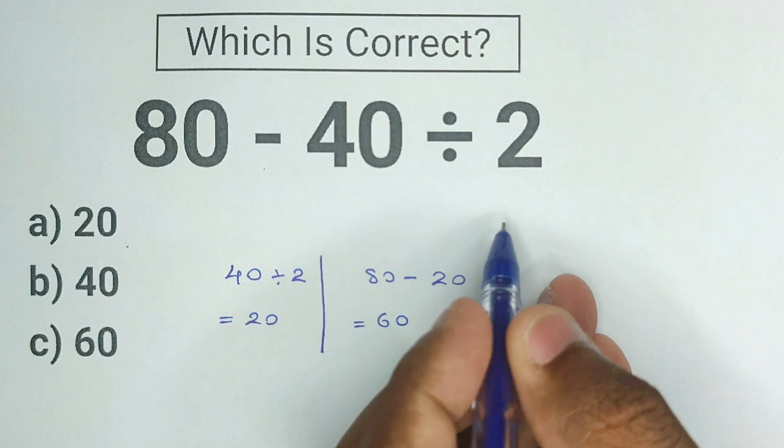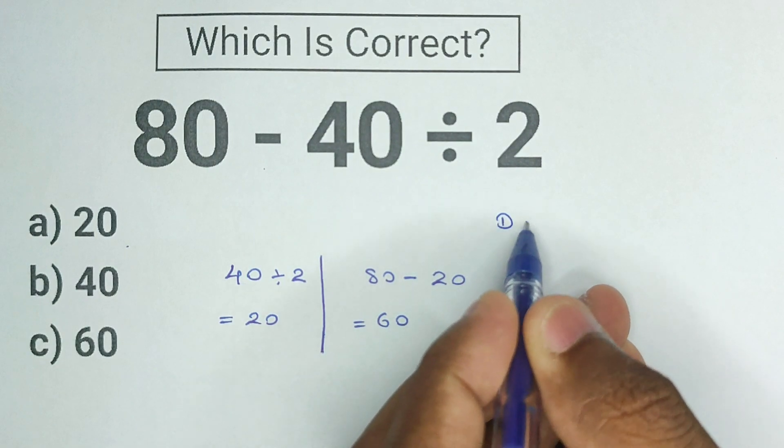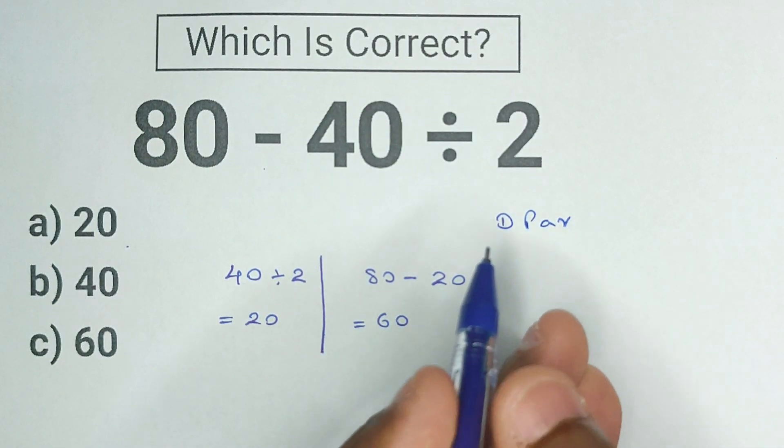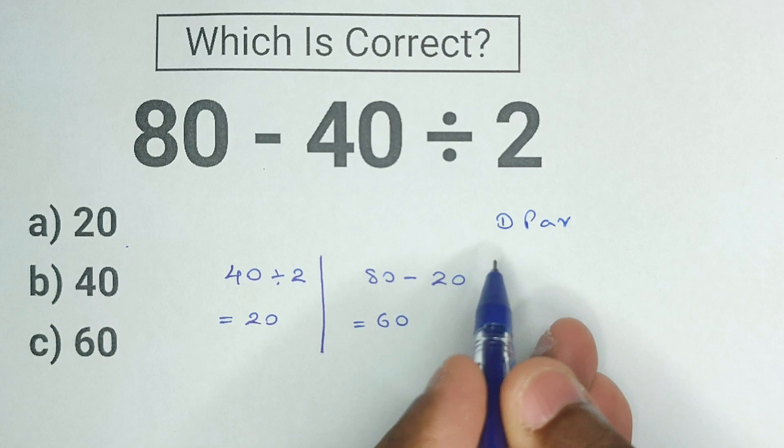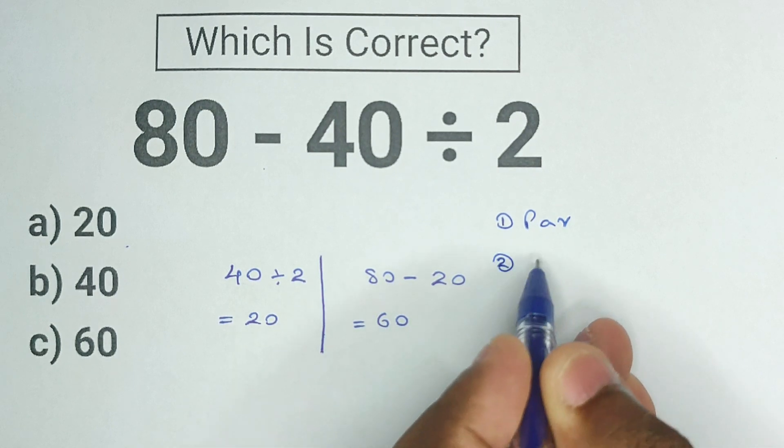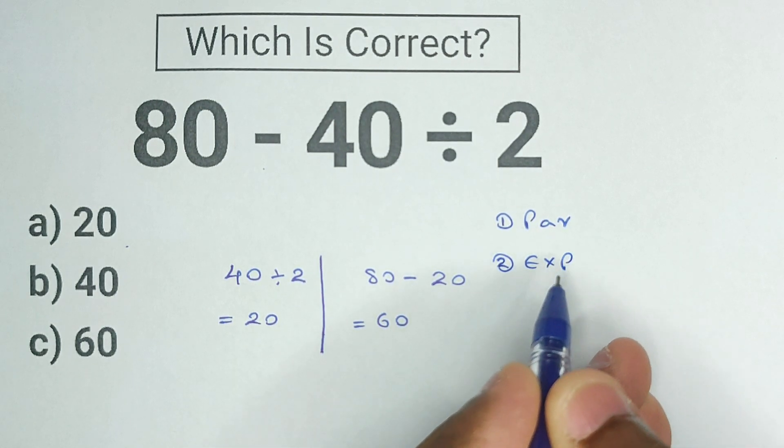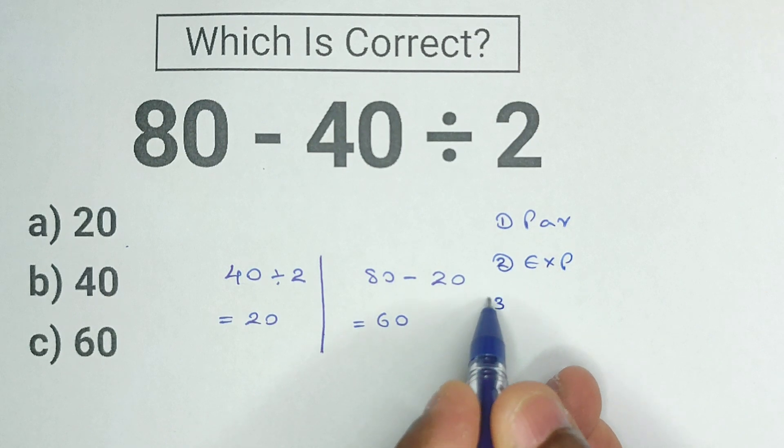The first of our list of the order of operations is parenthesis. The first thing we must do is to get rid of the parenthesis. Second on our list is exponents. If you don't know what an exponent is, don't worry about it.